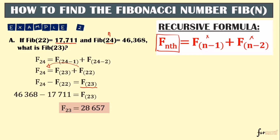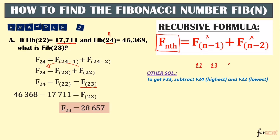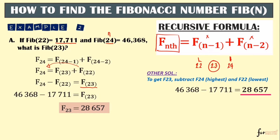Another solution without explicitly using the formula — but using the same concept — is: when three consecutive numbers are involved (e.g., 22, 23, 24) and the missing one is in the middle, simply subtract the highest given value from the lowest given value. So 46,368 minus 17,711 equals 28,657 — the same answer.